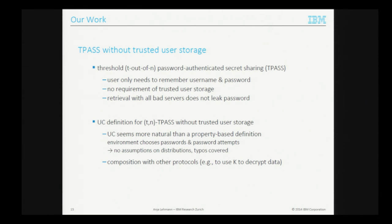We formally define our security guarantees as an ideal functionality in the UC framework. We chose UC because for password-based protocols it offers a much nicer modeling than property-based definitions. In UC, the environment provides inputs — the password and password attempts — so we make no assumptions on how passwords are distributed. Property-based definitions must define a password distribution, often assuming passwords for different protocols are independently chosen, which is rarely true since people reuse passwords across services.